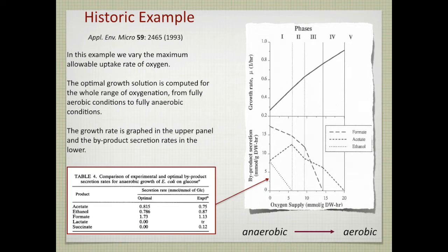At 20 units of oxygen coming in, there is full oxidation of glucose and no byproducts come out. As we drop oxygen availability below 20, byproducts start coming out. Acetate comes out first, then formate as the dashed line, and then there is a final kick where ethanol starts coming out. These are predictions, and in the table there are both predicted rates and measured rates for fermentation product secretion by E. coli under fully anaerobic conditions—and they agree surprisingly well.